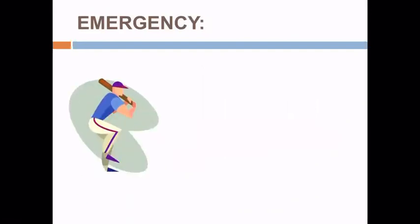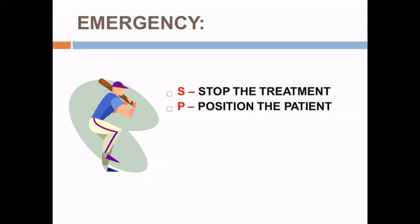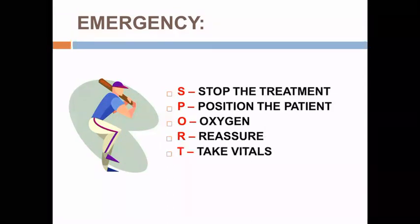Coming to the emergency. Here comes a sport person playing a sport. He has nothing to do with asthma — all you have to take from here is the word SPORT, as it will tell us what exactly to do during an emergency. S is to stop the treatment. P is for positioning the patient. O is for oxygen. R is for reassurance of the patient. And T is to take vitals. So this is how SPORT tells us what to do during an emergency.